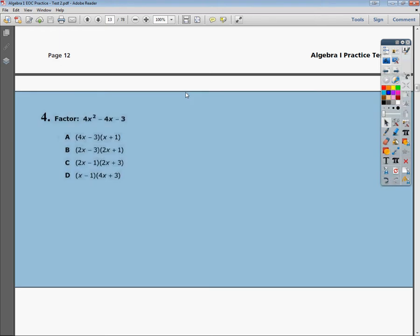Alright, this is the Algebra 1 EOC practice test, practice test 2 or Form 1. Question number 4: factor 4x squared minus 4x minus 3.